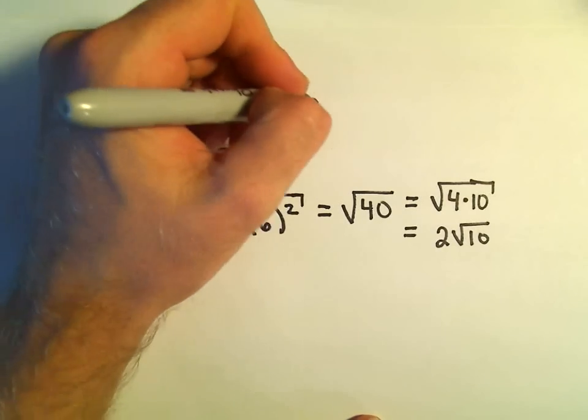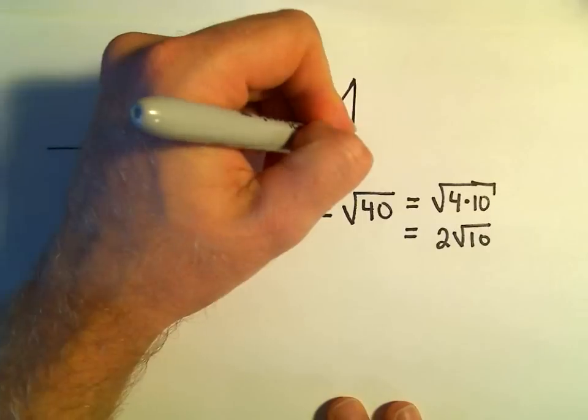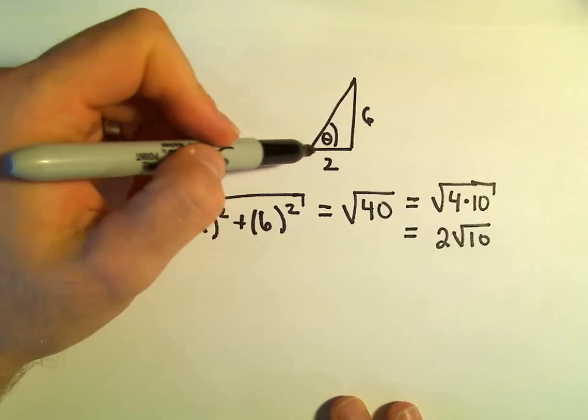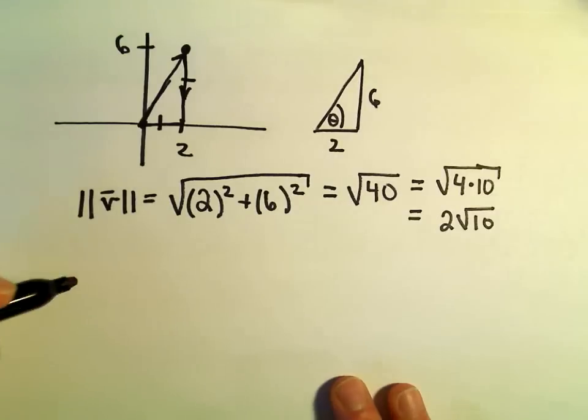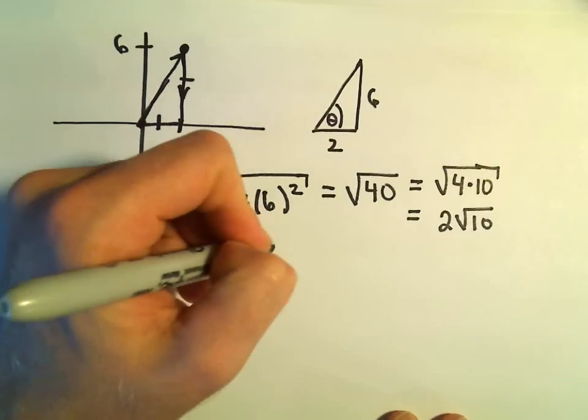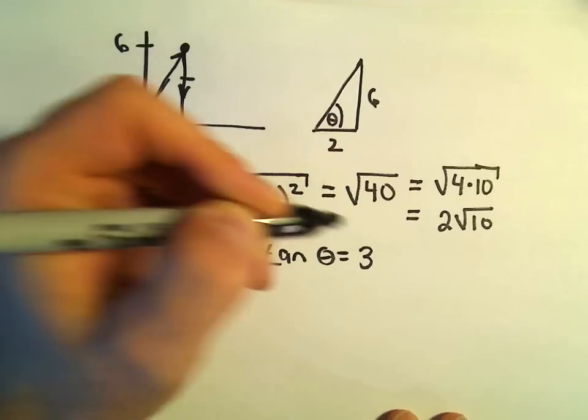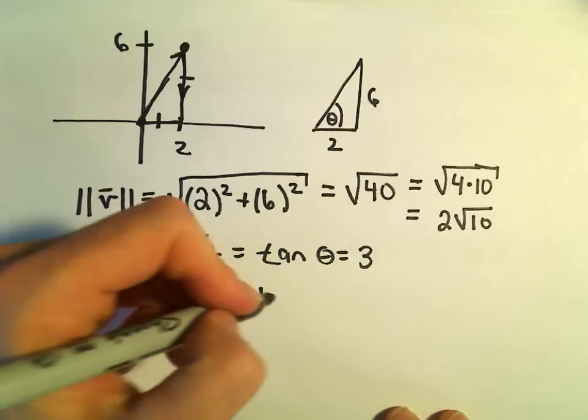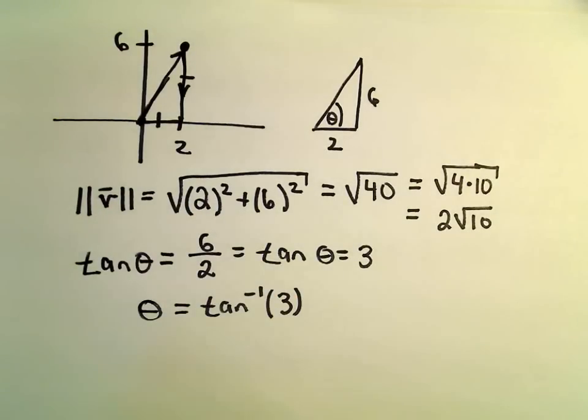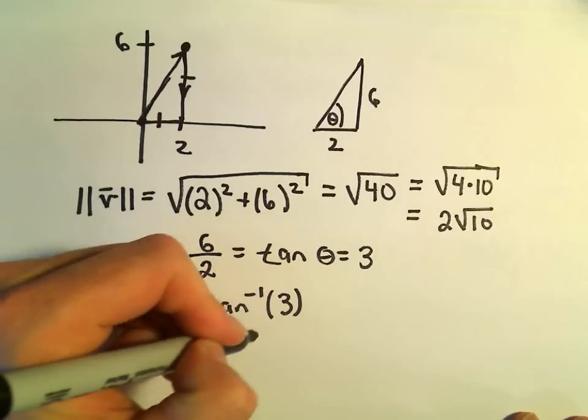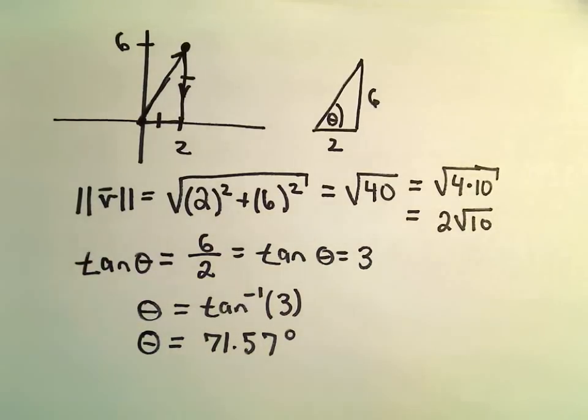To find the direction angle, again, I'm just going to think about a right triangle here. So I'm just going to make a little right triangle. This will be our angle theta. So the adjacent side has length 2 and the opposite side has length 6. So that simply says that tangent of theta would equal opposite over adjacent. So tangent of theta is going to equal 3. And now all we have to do is take the inverse tangent of both sides. So inverse tangent of 3, plug this in the good old calculator. So inverse tangent of 3, I'm getting that to be equal to 71.57 degrees after rounding.